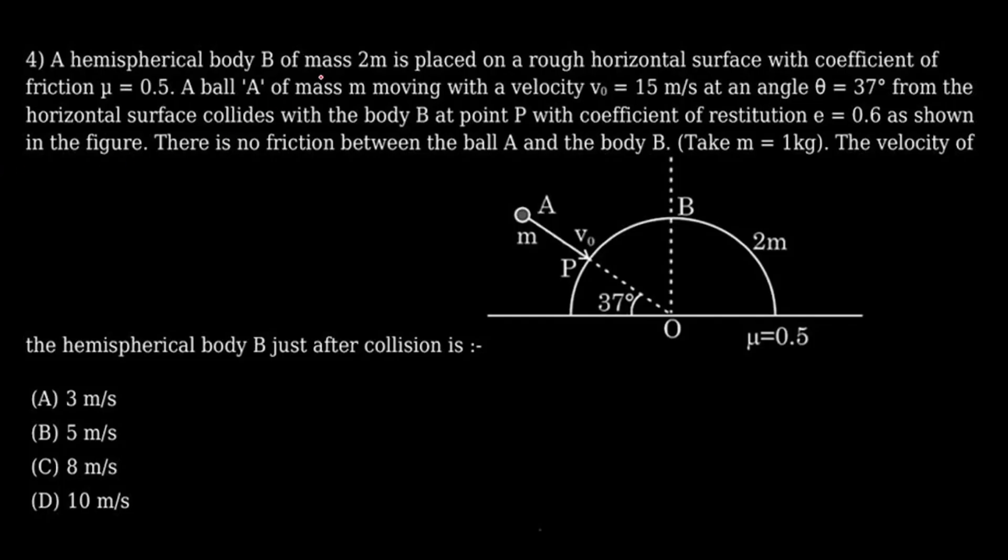There is a hemispherical body of mass 2m placed on a rough horizontal surface with coefficient of friction μ. A ball A of mass m moving with velocity at angle θ = 37 degrees from the horizontal collides with the body B at point P. The coefficient of restitution is 0.6 as shown. There is no friction between the ball A and the body. You have to find the velocity of hemispherical body B just after the collision. The options are given. Let us see how to deal with this problem.